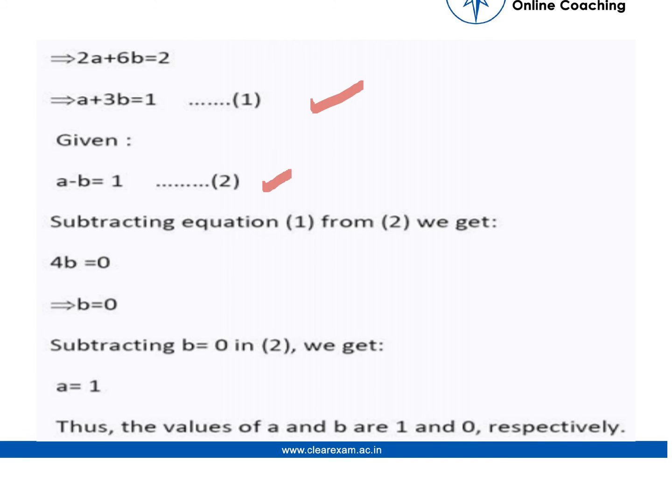On solving further, subtracting equation 1 from 2, we get the value of b equal to 0. Then further we put this value in equation 2, and we get the a value which is 1. So the values of a and b are 1 and 0, respectively. Thank you.